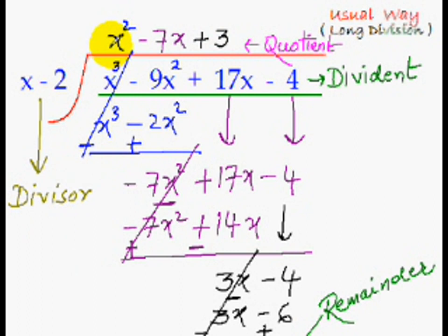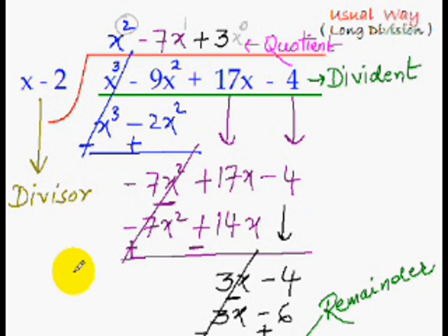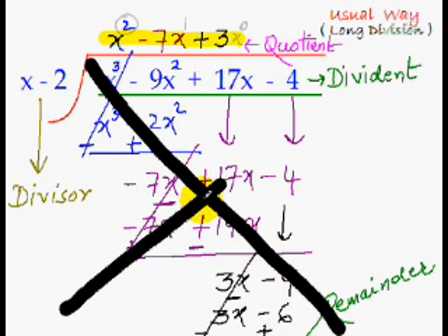It is interesting to note how the powers of x are gradually reducing in the quotient: here it was x squared, then x to power 1, then it disappeared — meaning it became x to power 0. If you found this long division method really long and complicated, the whole world uses it too. But I'm going to make you fly directly to the answer without any of these steps.